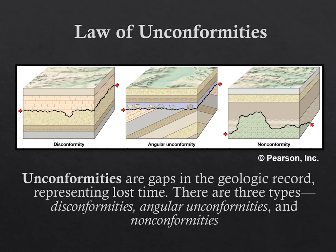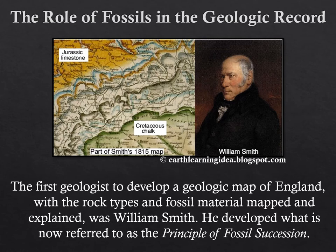These unconformities represent gaps in the geologic time record. That eroded layer is a missing section of time — it's like taking pages from a book and ripping them out. You know what happens at the beginning and at the end, but you're not sure what happens in the middle. That's essentially what happens with a nonconformity — there are sections of the story that are missing. In California, we have several examples of unconformities and we'll come back to those examples later on.